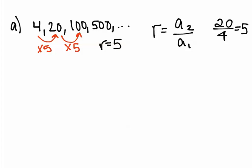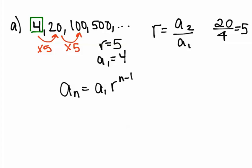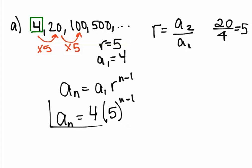To write the rule of a geometric sequence, you need two things: your ratio and your first term. In this sequence, 4 is my first term. Once you have those two things, plug them into the formula. A sub n equals A sub 1, which is 4, times r, which is 5 — put your ratio in parentheses, especially if it's negative — to the n minus 1. This is my rule.